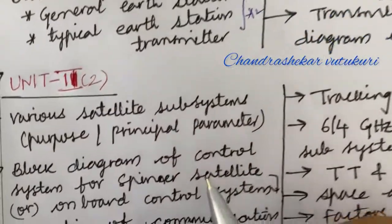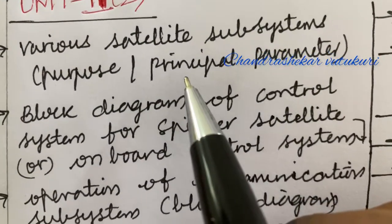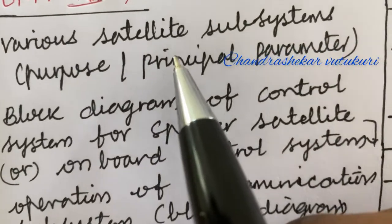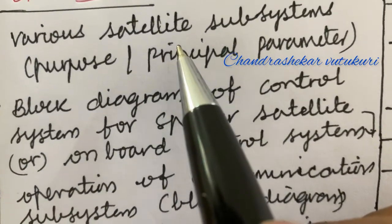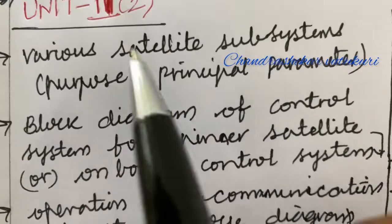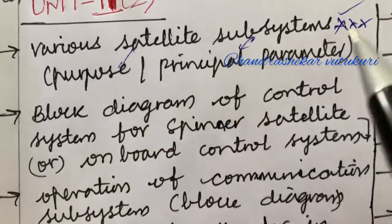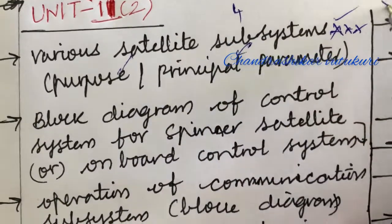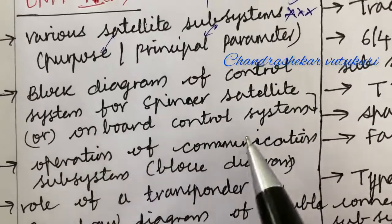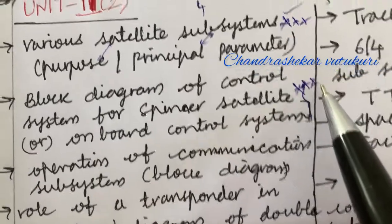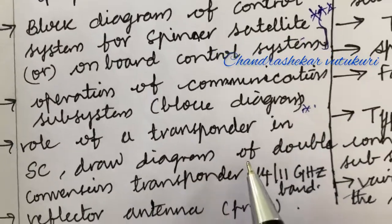Next, I have come up with Unit 2. It is a bit lengthy in structure, but we have covered it for mid exam — revise these topics once again so that you can work them out easily. Do not forget to write all answers in point-wise format, not in paragraphs, and use pencils for diagrams wherever necessary. Various satellite subsystems, their purpose and principal parameters — out of this you may get one question for sure, possibly questions 2, 3, 4, or 5. Block diagram of control system for a spinner satellite or onboard control system — out of these two you are getting one for sure, possibly in the form of 4a or 4b.